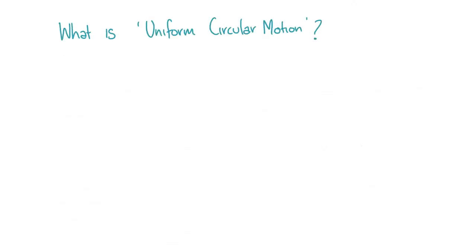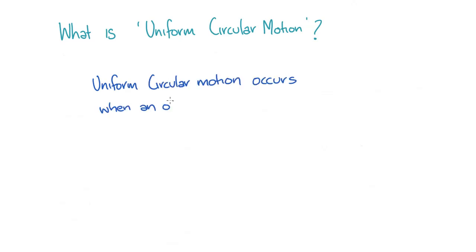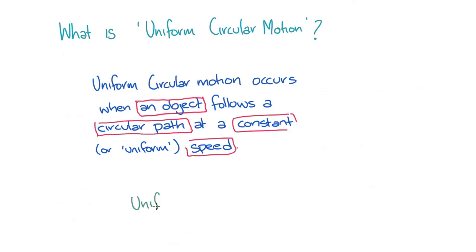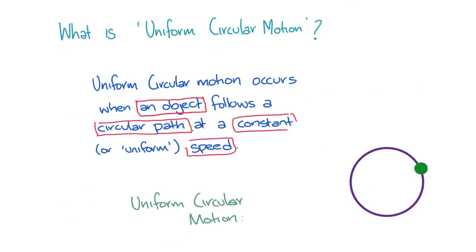So what is uniform circular motion? It occurs when an object follows a circular path at a constant, or uniform, speed. You can see in the graphic an object that is following a circular path at a constant speed, and is therefore undergoing uniform circular motion.